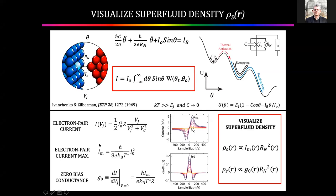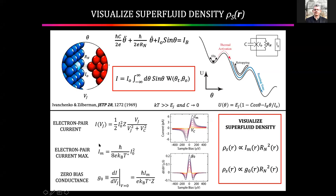From these two equations: the superfluid density goes as the critical current squared times junction resistance squared. You could measure the superfluid density by measuring the current maximum as a function of location and knowing the junction resistance, or by measuring the zero-bias maximum as a function of location. As Bob Dynes showed, these two techniques should work at much higher temperatures.